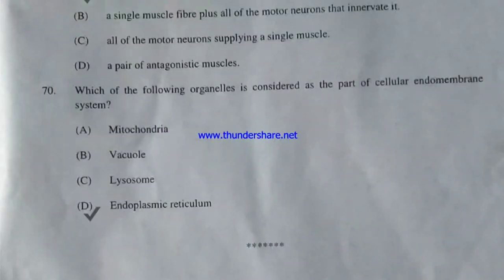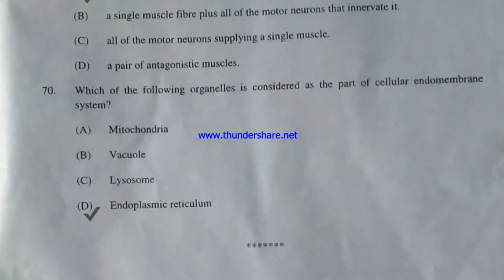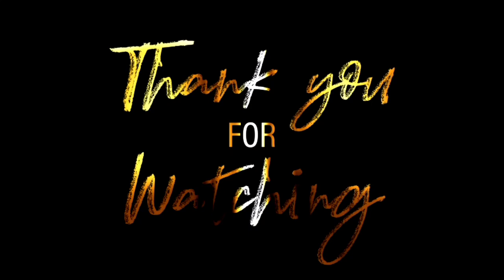Which organelle is considered part of the cellular endomembrane system — mitochondria, vacuole, lysosome, or endoplasmic reticulum? The correct answer is endoplasmic reticulum. In some cases lysosome is also included, but primarily the ER is part of the endomembrane system. That covers 70 questions of CPET 2021. Please keep watching — minimum 10 questions from the discussed topics appear in CPET 2021. If you like this video, subscribe to the channel and press the bell icon.